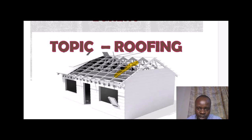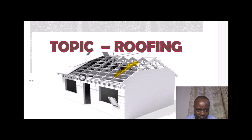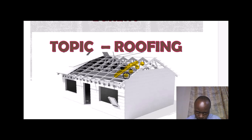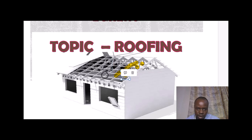We also have the purlins. The purlins are the smaller roof members that are running across the rafters. You can see them — they are one, two, three, four, and then five.